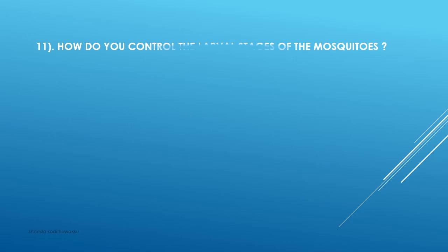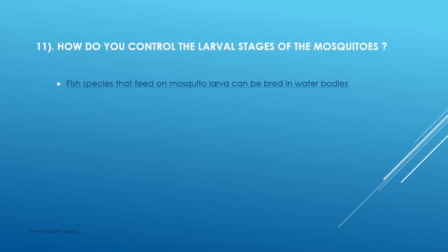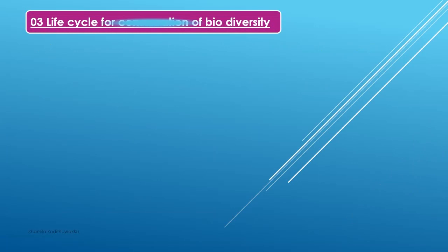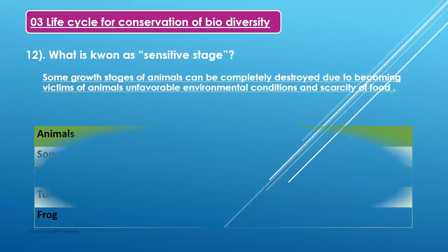How do you control the larva stage of the mosquito? Fish species that feed on mosquito larva can be introduced into water bodies to control the larva.